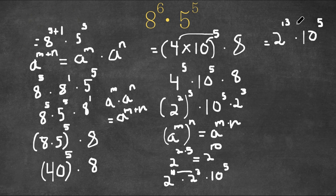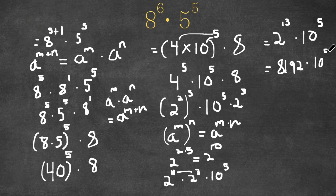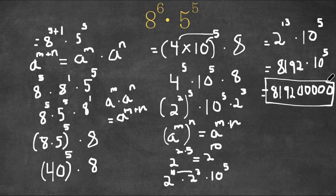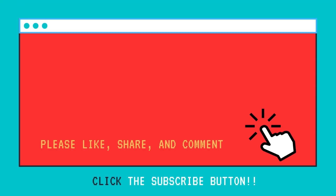Now 2 to the power of 13 equals 8192, and we are still multiplying that with 10 to the power of 5. Multiplying by 10 to the power of 5 means we add 5 zeros to this number, giving us 819,200,000. So this here is going to be our answer.